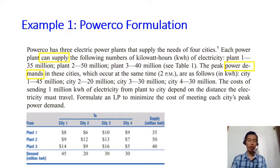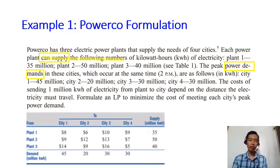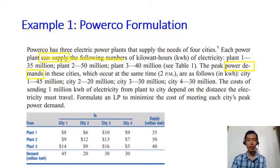Let's start by looking at a transportation problem and try to formulate a linear programming model for it. The problem states that an electric power plant can supply the following numbers — and remember, whenever you see 'can supply,' it means this is a constraint describing the maximum supply available.